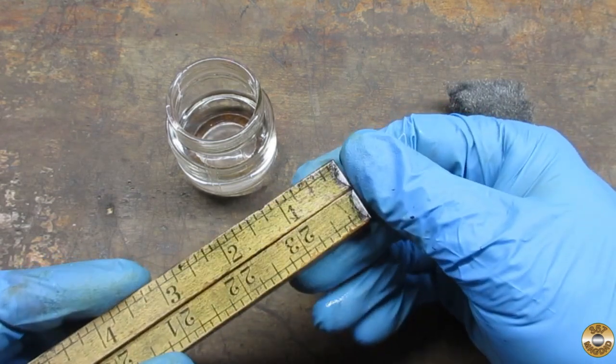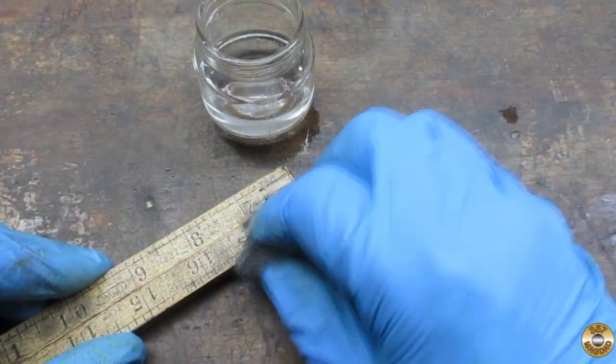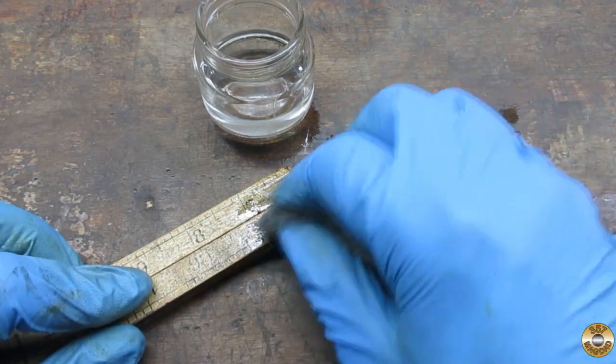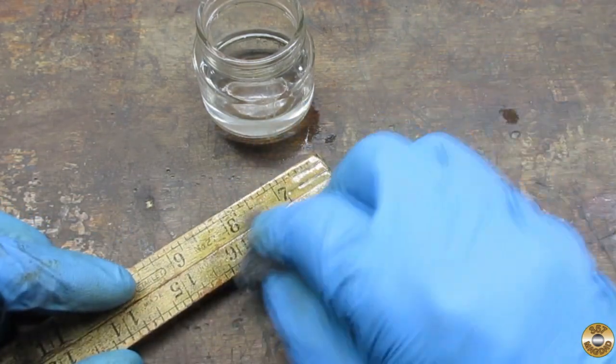It seemed like it was removing the grime without damaging the markings. I went over the whole ruler, trying carefully to just use enough pressure to remove the stains without damaging the markings.